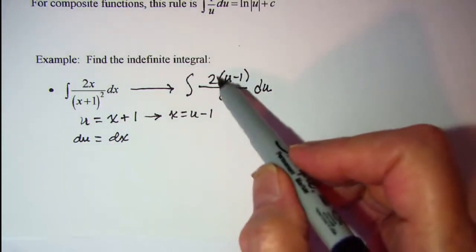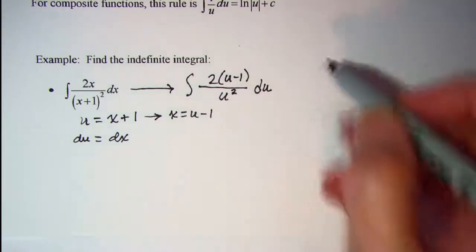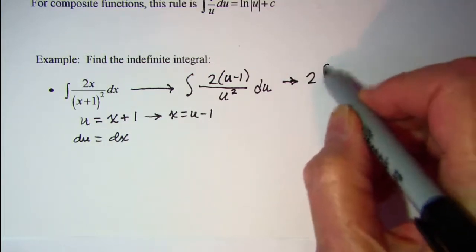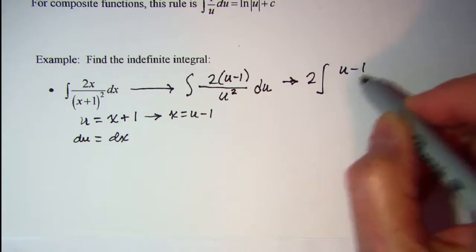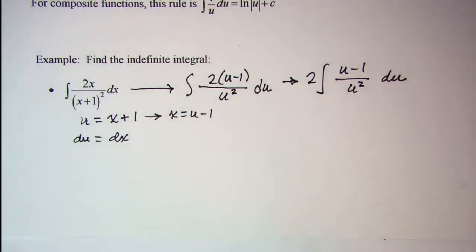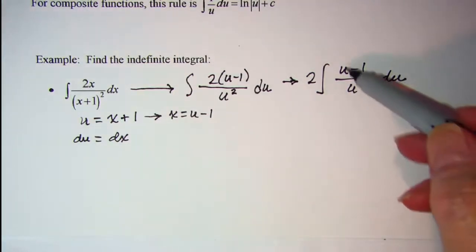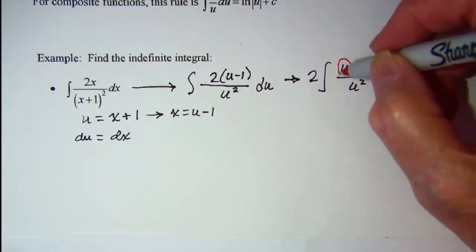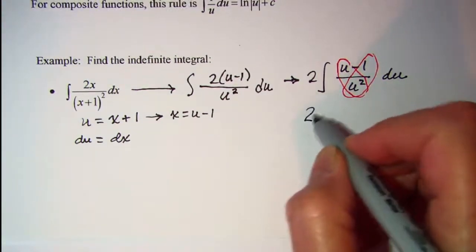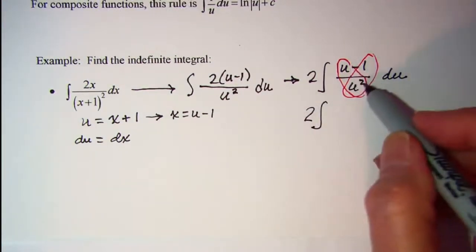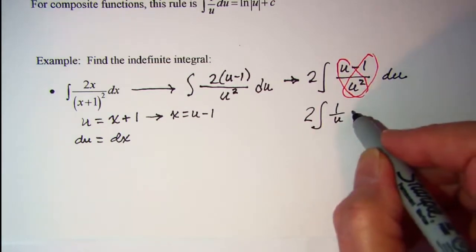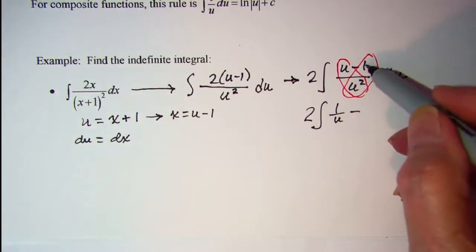So we can pull this 2 out in front of our integral and this becomes 2 times the integral of u minus 1 over u squared du. Now I'm going to break this into two separate fractions. So I have 2 times the integral of u over u squared, which is the same as 1 over u, minus 1 over u squared.